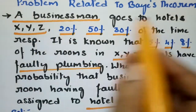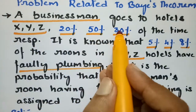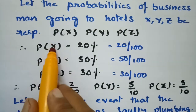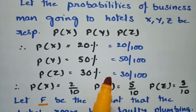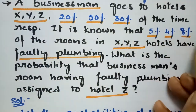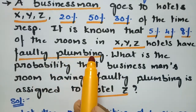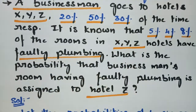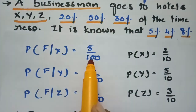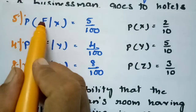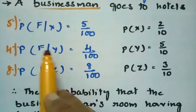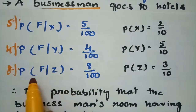So the probability of the businessman having faulty plumbing from hotel Z is 4 by 9. To summarize the question: a businessman goes to hotels X, Y, Z with probabilities 20, 50, and 30 percent respectively. The faulty plumbing percentages are: hotel X is 5 percent, hotel Y is 4 percent, and hotel Z is 8 percent. These six values are all we need to apply Bayes' theorem.